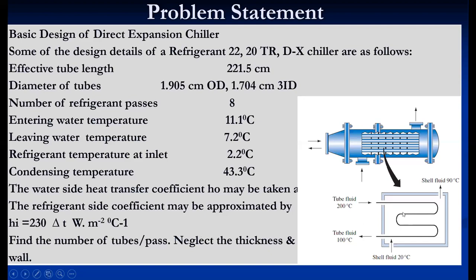The inner side heat transfer coefficient H_i is 2.30 and outer water-side heat transfer coefficient H_o is 4.16. We have to calculate the number of tubes in one particular pass. Multiple tubes are possible in one pass. Since all temperatures are given — inlet and outlet for both fluids — we go for the LMTD approach.